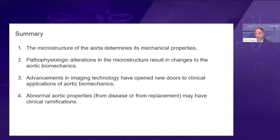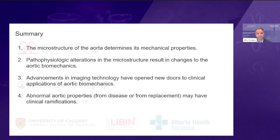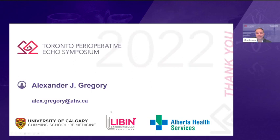In summary, it's the microstructure of the aorta that determines the mechanical properties we care about. With aortic aneurysm formation, the pathophysiologic changes in microstructure result in differences in the biomechanics of that tissue, and we can use those biomechanical measures to ascertain how severe the pathophysiology is. Amazing advancements in imaging technology have opened new doors for better clinical applications of biomechanics, enabling longitudinal studying and large cohorts. The abnormal aortic properties have implications on patients before and after surgery that are applicable to all clinicians.